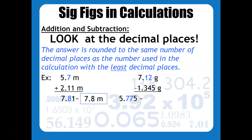As far as rounding is concerned, notice there is a one next to the eight. The rule of thumb: if it's five or above, round up; if it's four or below, chop it off. Since this is a one, we chop it off, giving us 7.8 meters. For the second example, we've got two decimal places here and three here, so our answer should only have two decimal places. There is a five next to the seven, so with rounding that five rounds the seven to an eight, and you should end up with 5.78 grams.